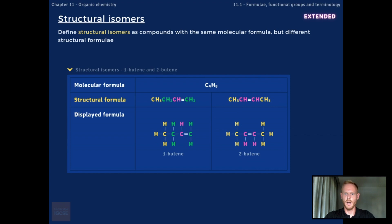1-butene and 2-butene are also structural isomers. Both compounds share the same molecular formula, C4H8, but have distinct physical and chemical properties due to differences in structural formula. Finally, you need to describe the general characteristics of a homologous series.